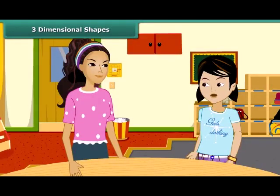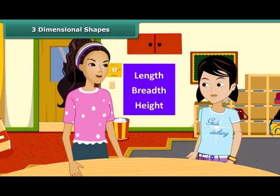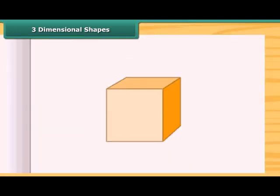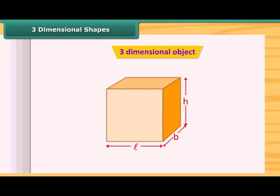What are three-dimensional shapes? A solid object having three measurements like length, breadth, and height are called three-dimensional objects. Look at this cuboid. It has length, breadth, and height. So this is a three-dimensional object.